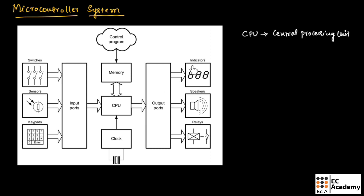Output signals can be connected to devices like LED indicators, speakers, and relays. These input devices provide information to the computer from the outside world. In a personal computer, the most common input devices are a keyboard, mouse, scanner, and modem. Output devices communicate information from the computer system to the outside world; in a personal computer, the most commonly used output device is a screen display, along with printers and modems. Some input devices can provide analog signals as input, and these analog signals should be given in digital form to the controller.